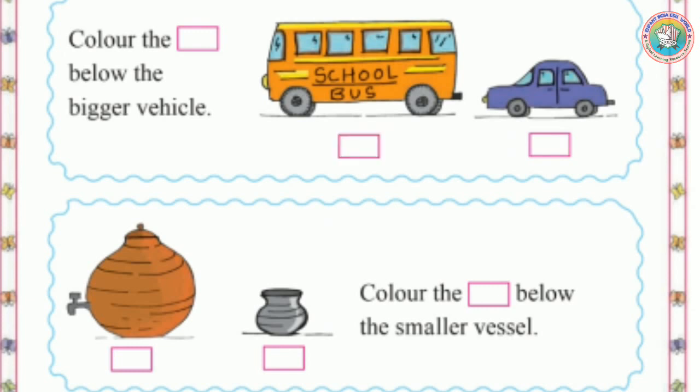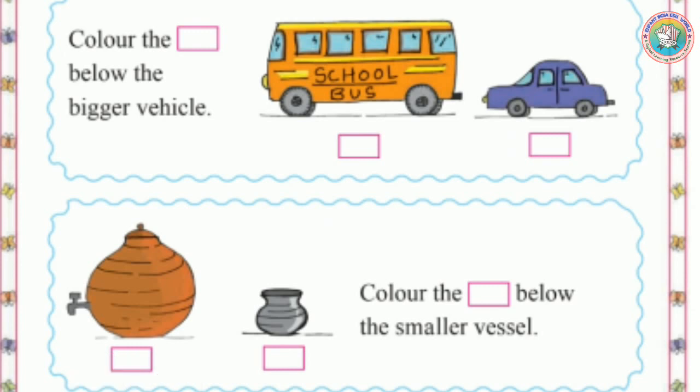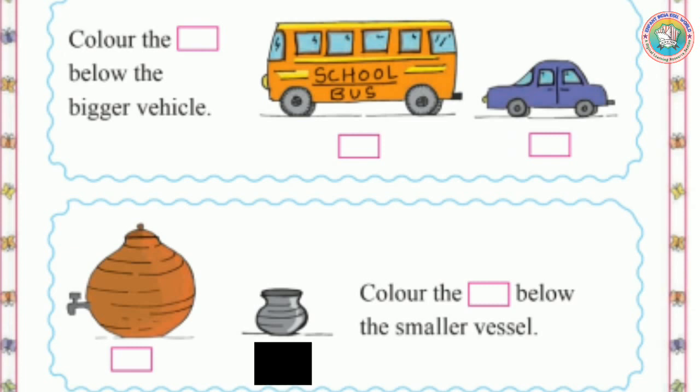Third example: two pots. The red pot is bigger than the black pot. Red pot is bigger than black pot.